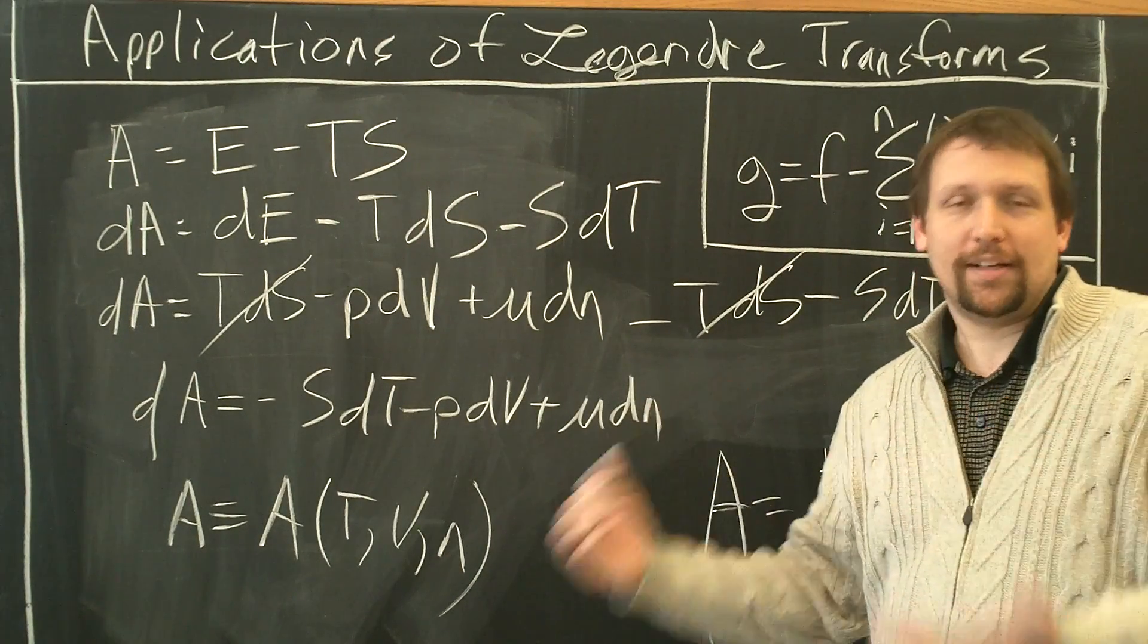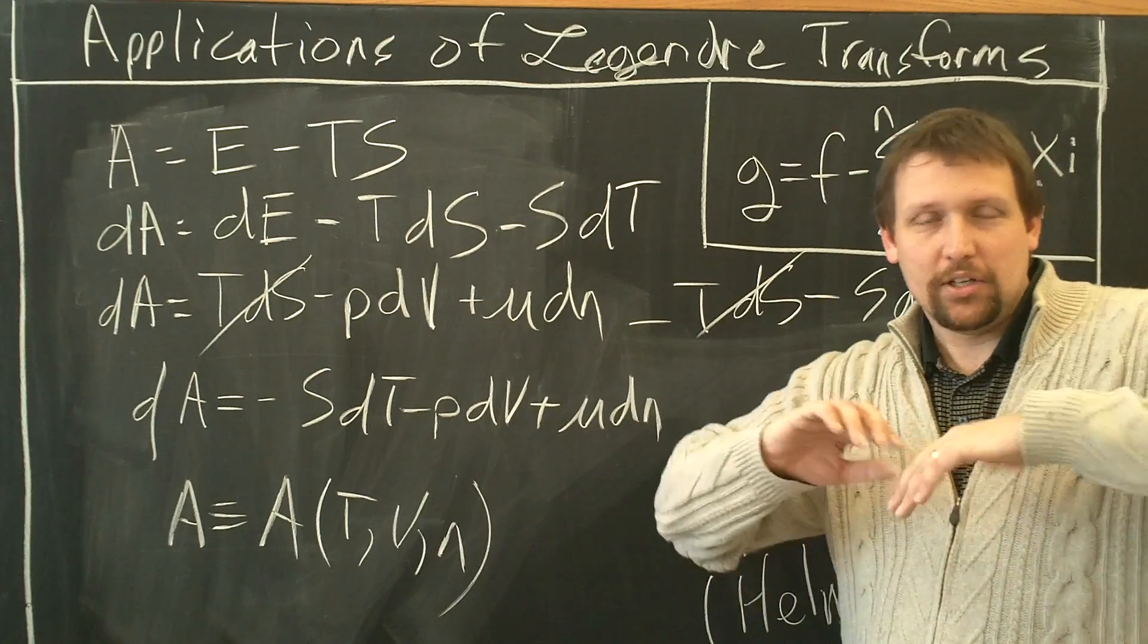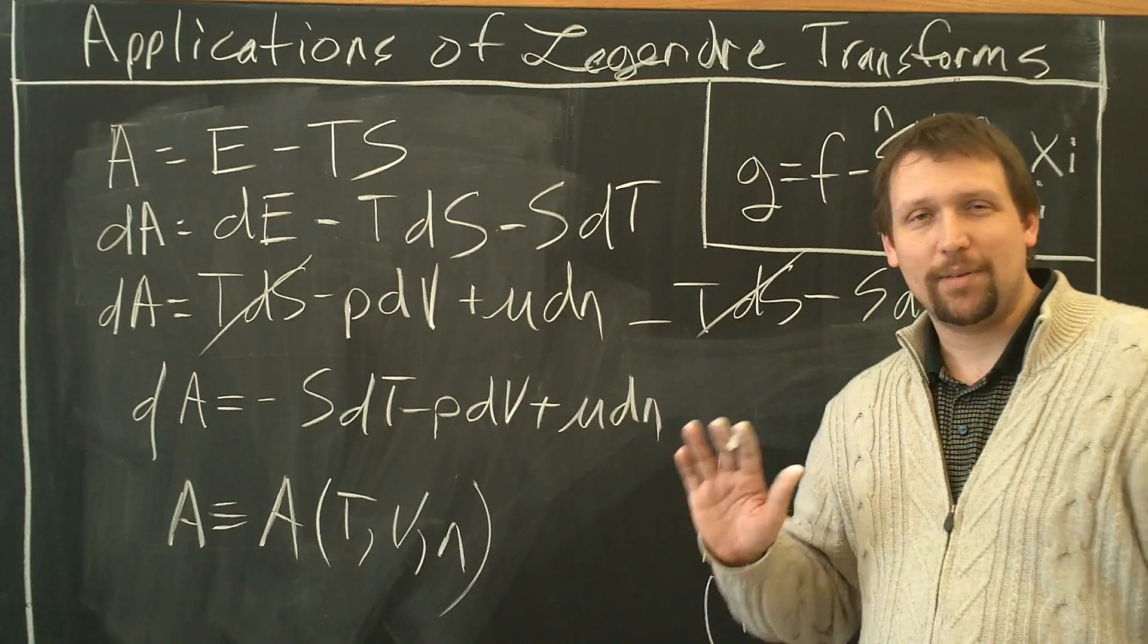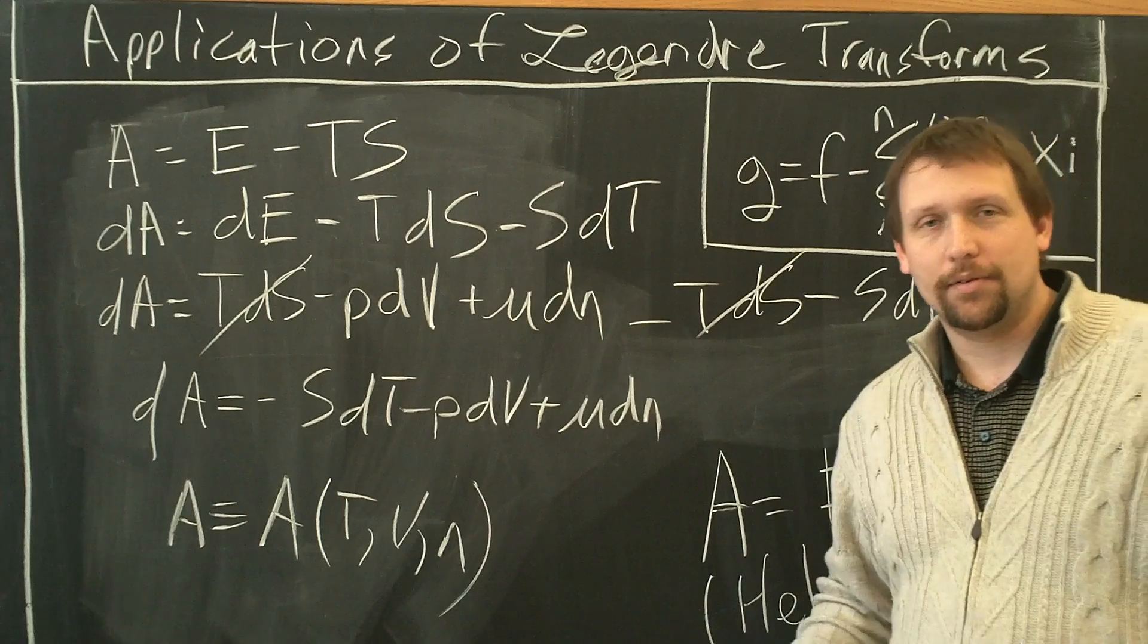A is a natural function of T, V, number of moles N. That's Helmholtz free energy. That's how we get to it. We can use it in many other applications later on, but this is at the very basic level where it comes from.